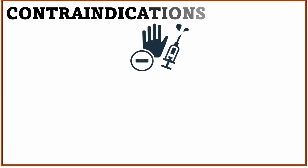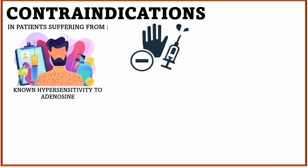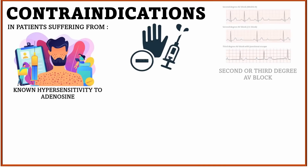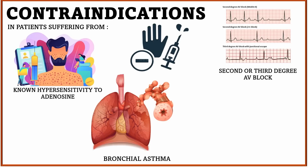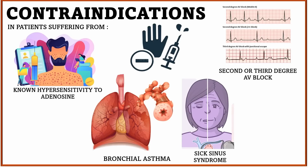Let us now see the contraindications for the use of Injection Adenosine. First, it should not be given to a patient with known hypersensitivity. Second, it is not to be given in patients having 2nd or 3rd degree heart block, bronchial asthma, and sick sinus syndrome.